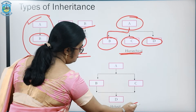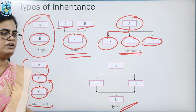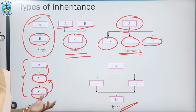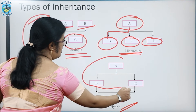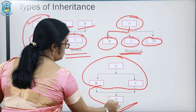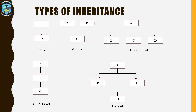Finally, we have a hybrid type of inheritance. A hybrid type of inheritance basically combines one or more other types of inheritance. Here you see this is a hierarchical, and then a multiple inheritance coming into existence, and a combination of both of them is known as a hybrid inheritance. These are the various types of inheritance that we could be doing in C++ for generating inheritable codes.